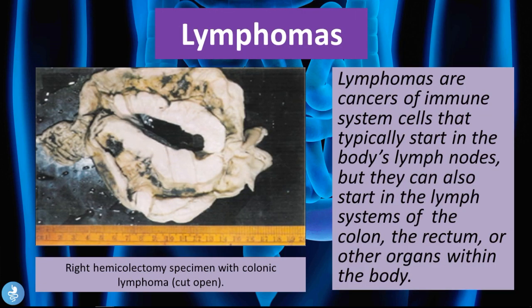Lymphomas are cancers of immune system cells that typically start in the lymph nodes but can start in the lymph system of the colon, rectum, and other organs. The picture shows a right hemicolectomy specimen with a colonic lymphoma cut open, revealing the tumor that developed in the right side of the colon.